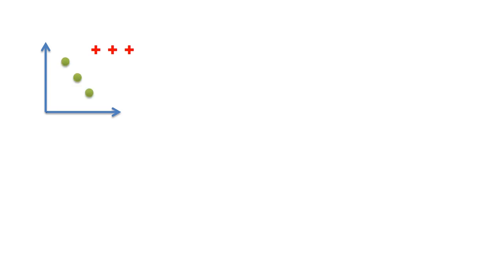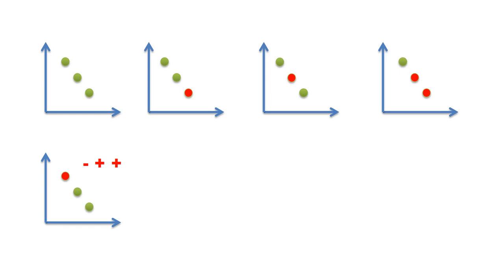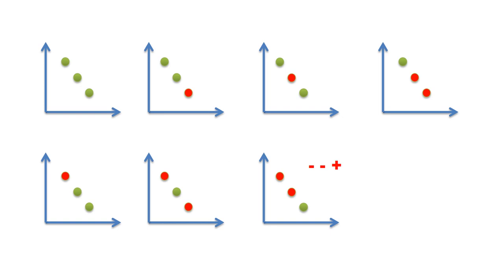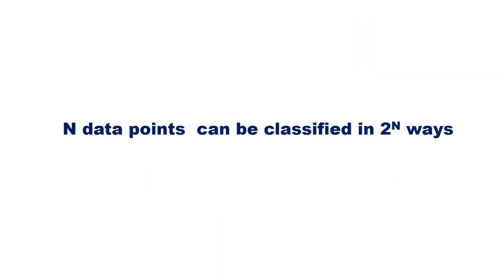Now assume that we have three instances of data. They can be classified in eight different ways: all positive; first two positive and last one negative; positive, negative, positive; positive, negative, negative; negative, positive, positive; negative, positive, negative; negative, negative, positive; and all negative. In general, if we have n data points, they can be classified in two raised to n different ways.